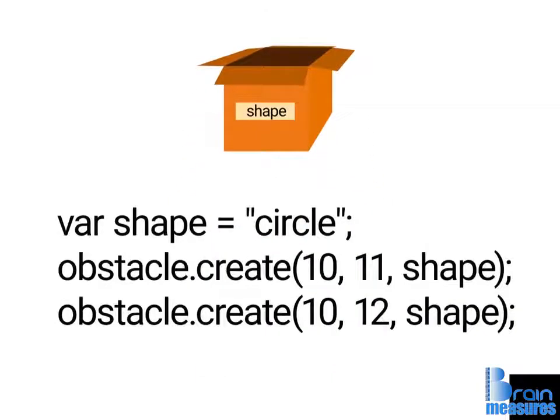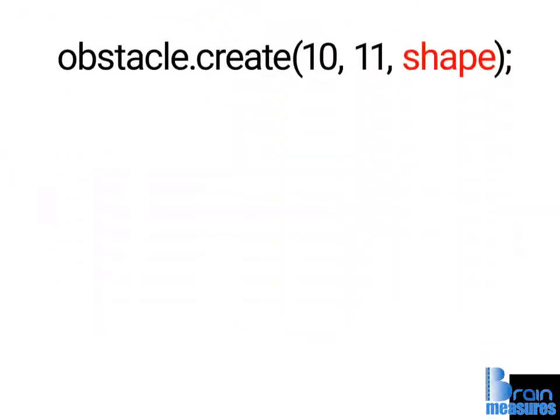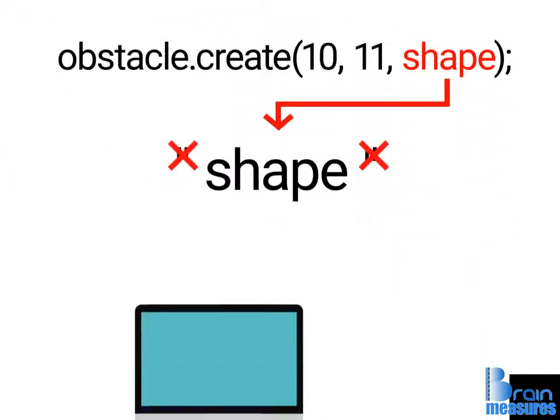The second thing to note is that the third parameter of our obstacle.create instruction is not text. Since there are no quotation marks around the word shape, the computer understands that this is a variable.